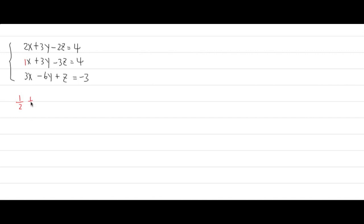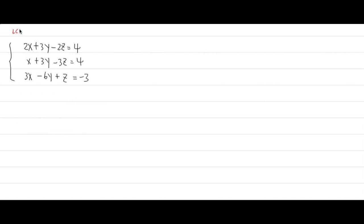How are you going to add 1/2 plus 1 over 1 plus 1 over 3? To add fractions, you need to figure out the lowest common multiple of the denominators — 2, 1, and 3 — which is going to be 6. After you determine the LCD, you can change everything so that they all have the same denominator. The lowest common multiple of 2, 1, and 3 is 6.